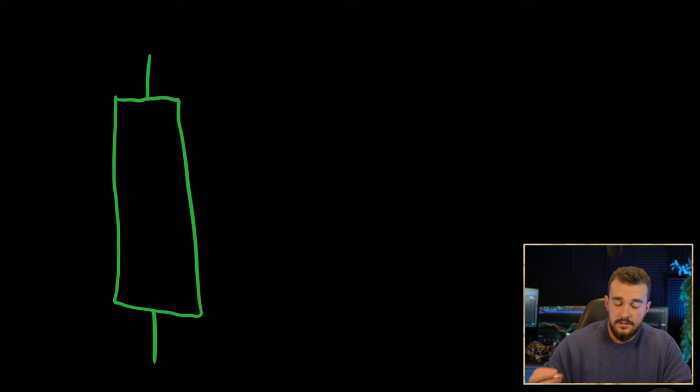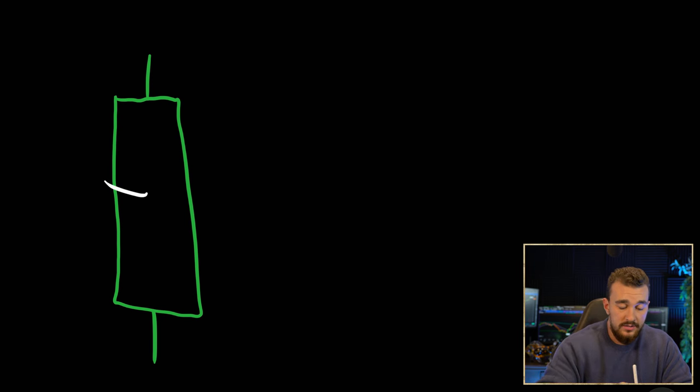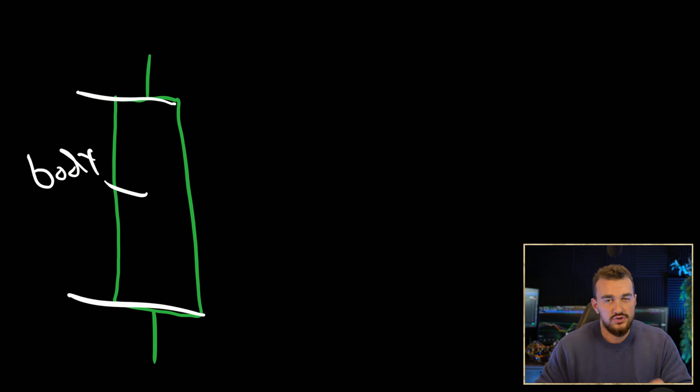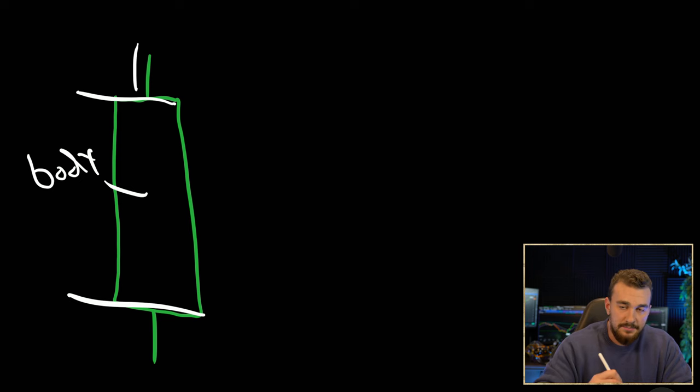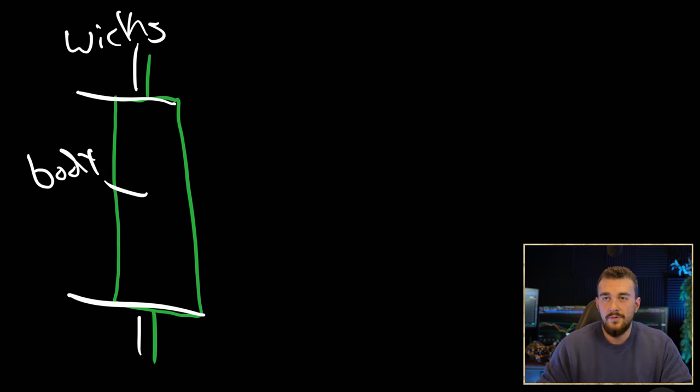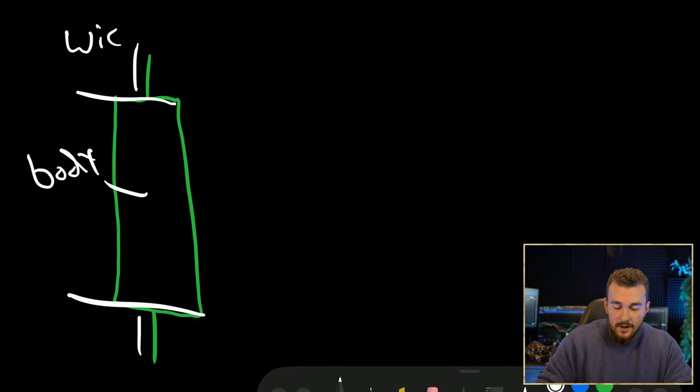Candles can be very simple on their own. They start to get more complicated when you put everything together, but I think you'll pick it up extremely quickly if we start with a base and then move into putting them all together. Here's the base. This is what any green candle might look like. You have the body — that's the fat part of the candle — and then these lines on the top and bottom are called wicks.